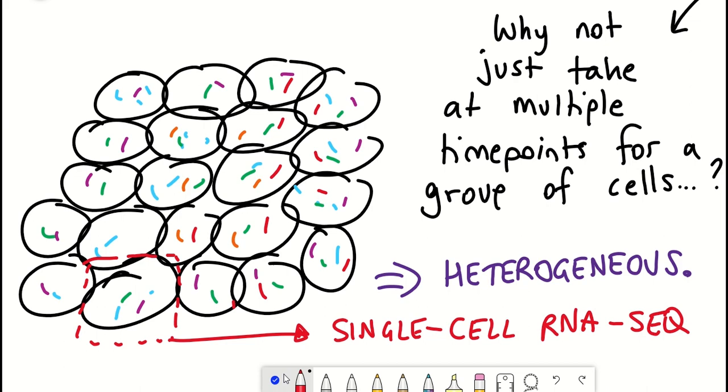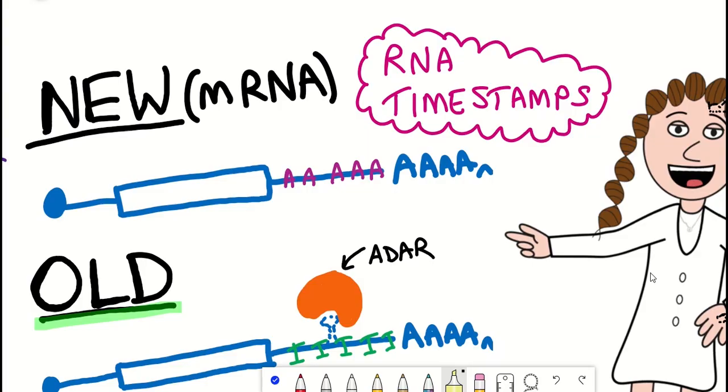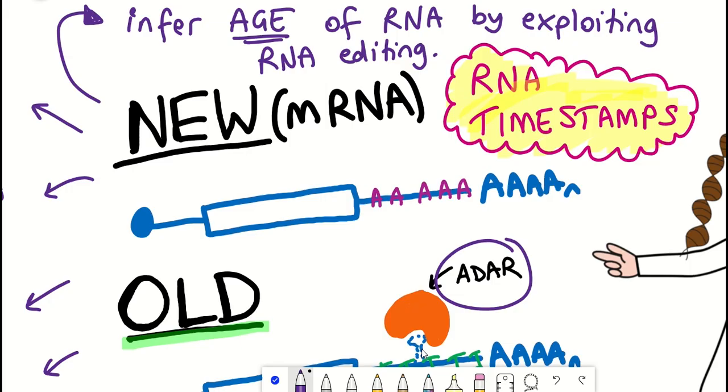So one of the goals of the lab behind this recent Nature publication was to try and develop an approach that uses single-cell RNA sequencing that can also provide information about the dynamics of gene expression. The approach that they present are RNA timestamps, a method that can infer the age of individual RNAs in RNA sequencing data by exploiting RNA editing. So how does this work then?